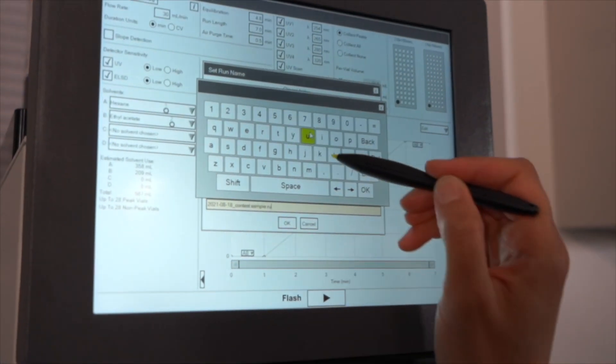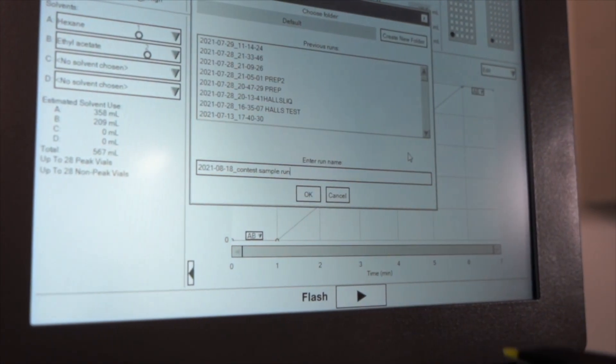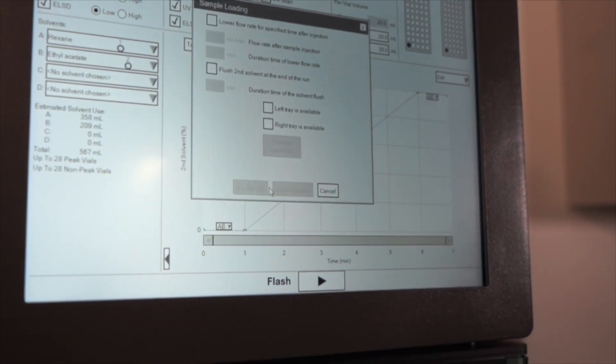By using a programmable solvent gradient and UV or ELS detector, we can target and collect our compounds of interest, allowing us to purify more material, use less solvent, and save time.